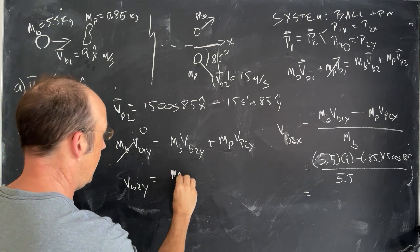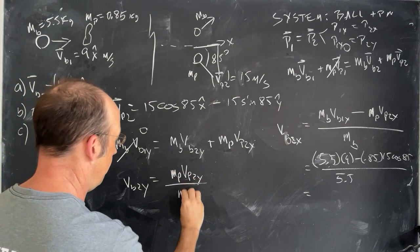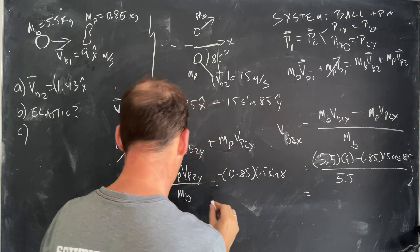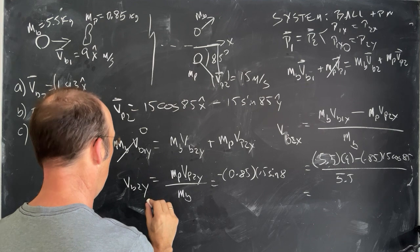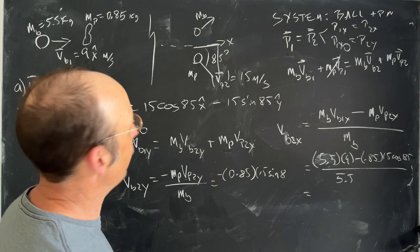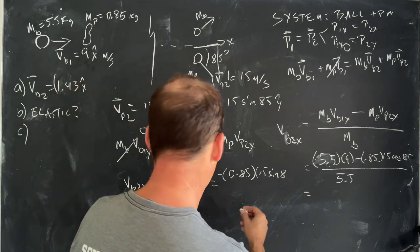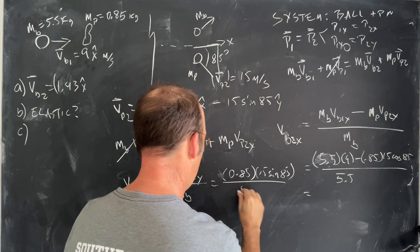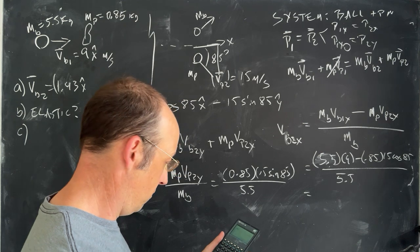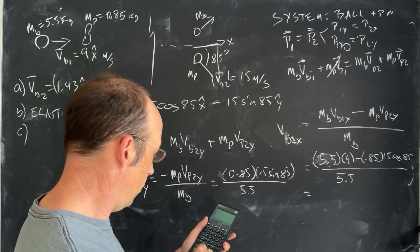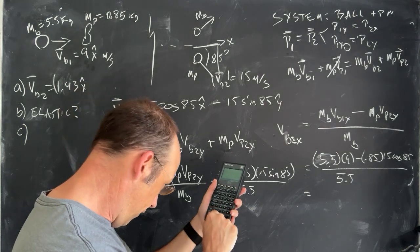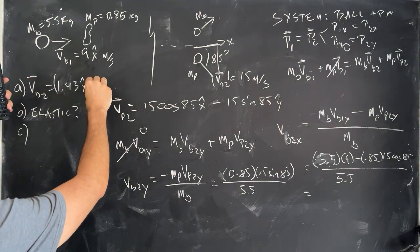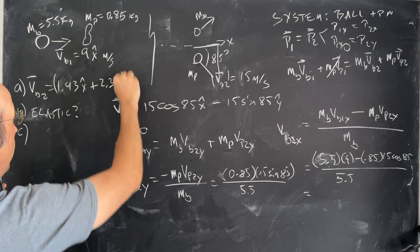vB2y equals mp times vp2y divided by mb. So it's going to be 0.85 times 15 sine 85 — this is negative, but negative times a negative is going to be positive — divided by 5.5. Calculating that, I get 2.3 y-hat meters per second. So that's my final velocity vector.